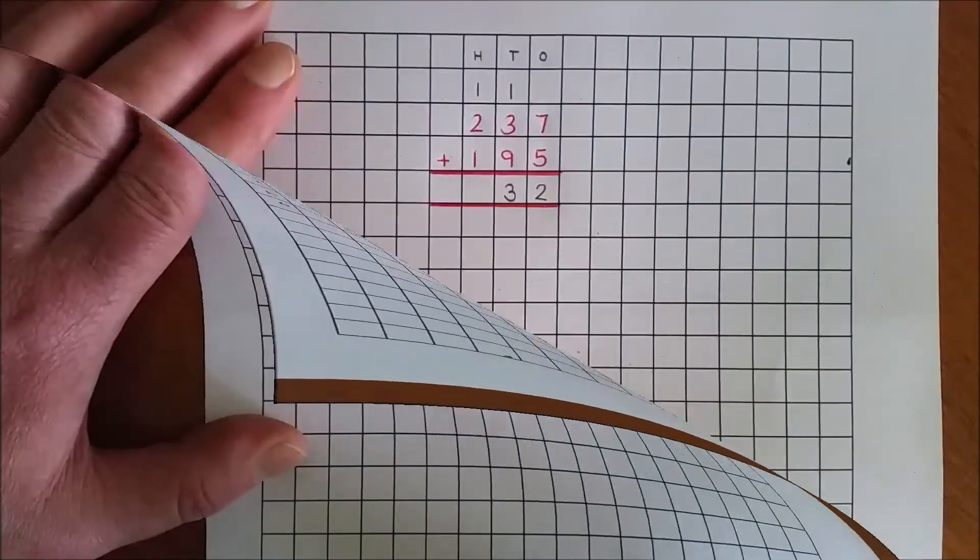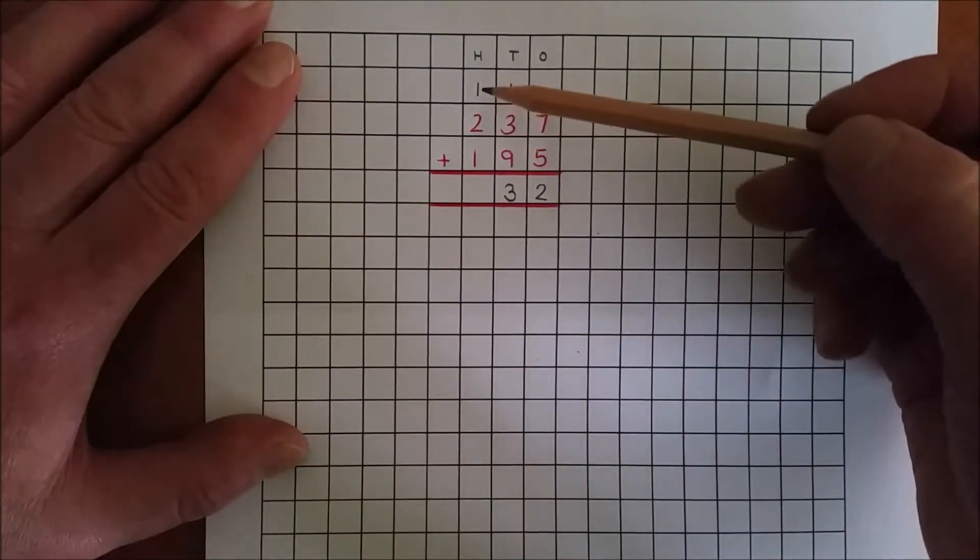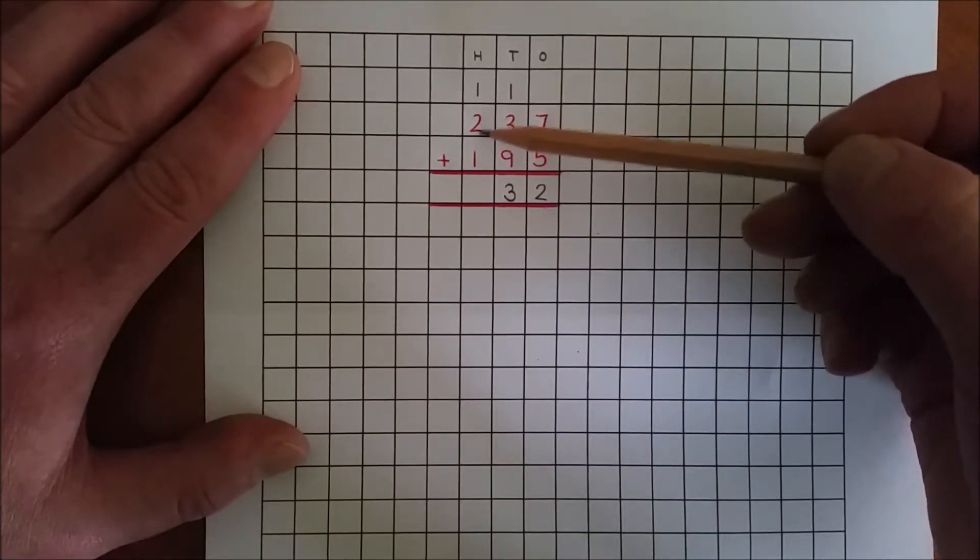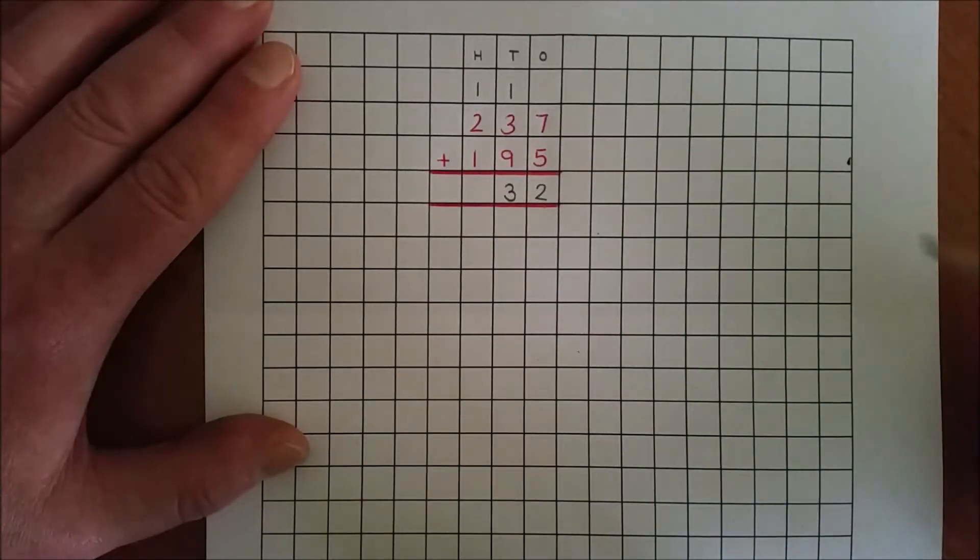Add the hundreds. 100 and 200 and 100 is 4 hundreds.